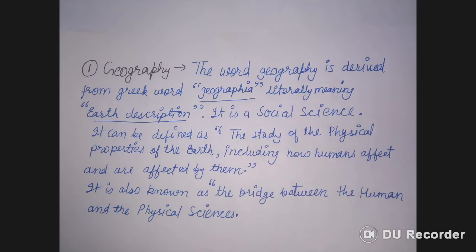Geography is known as the bridge between human and physical sciences because it is divided into two major groups: physical geography and human geography. In physical geography we study the physical sciences in combination with geographical aspects, and in human geography we study the human sciences in combination with physical aspects.